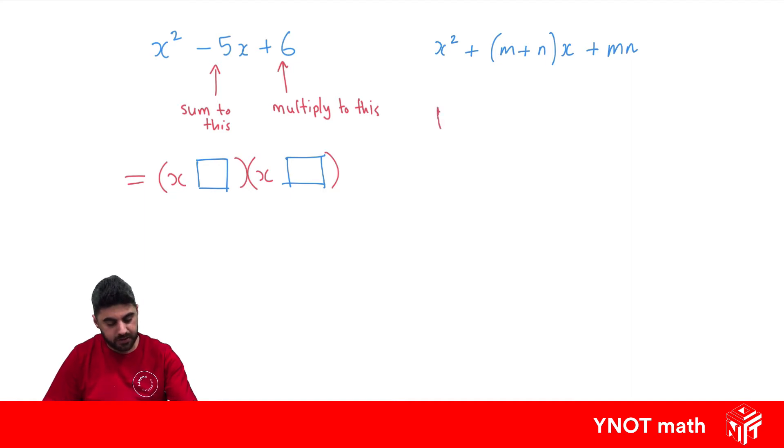Some factors of 6 are going to be 1 × 6 = 6, or 2 × 3 = 6.